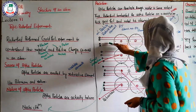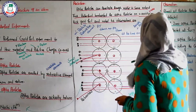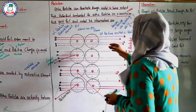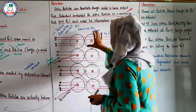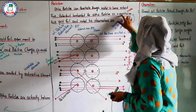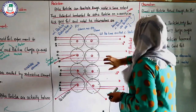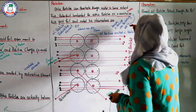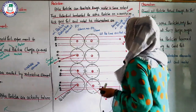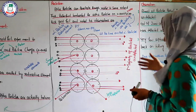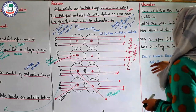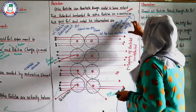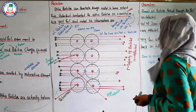Alpha particles penetrate to some extent and are absorbed easily. Thus, Rutherford bombarded alpha particles — all the red color lines you see are the alpha particles — on this gold foil. The thickness of the gold foil is 0.0004 centimeters. This is also an MCQ point: what is the thickness of the gold foil used in Rutherford's experiment? The answer is 0.0004 cm. The reason Rutherford used this very small thickness was so that alpha particles could easily and efficiently penetrate through it.